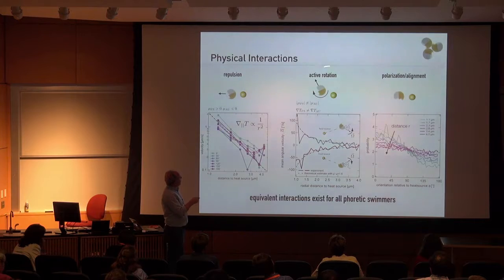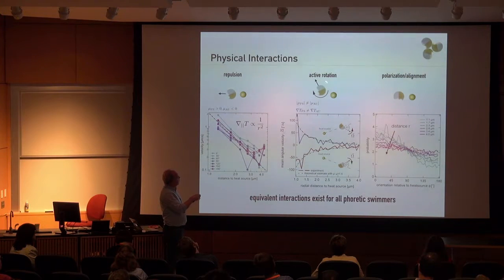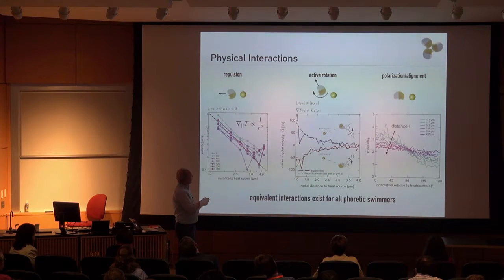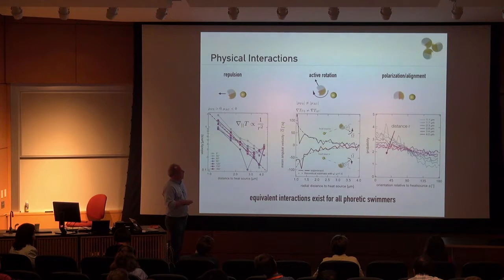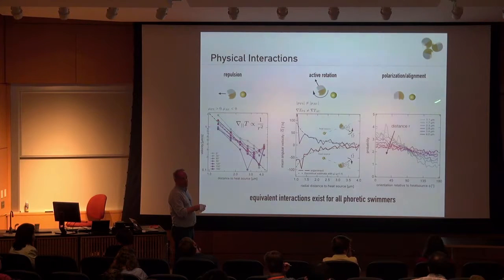The second result is active rotation. If you place a particle not oriented in the radial direction, the temperature gradient causes different surface flows on either side, producing a rotational motion — an active realignment of the particle. You can measure the angular velocity as a function of distance, getting two branches depending on the direction of rotation. This is, I think, the first time the realignment of a particle in a temperature gradient has been observed. It also scales with 1/r², and the dashed lines are theory, which can be fitted using known mobility parameters.